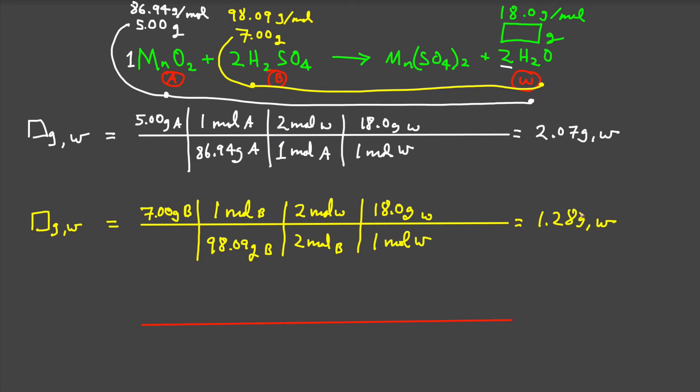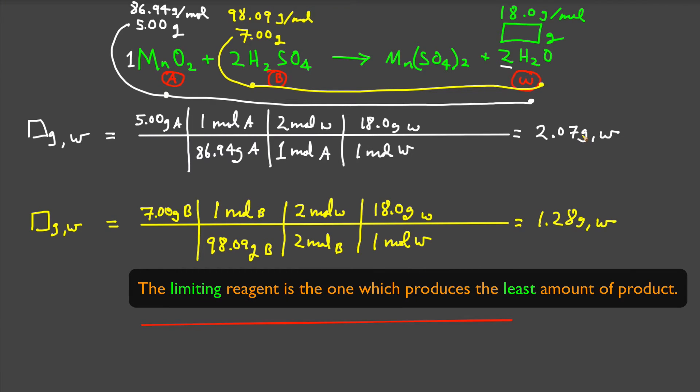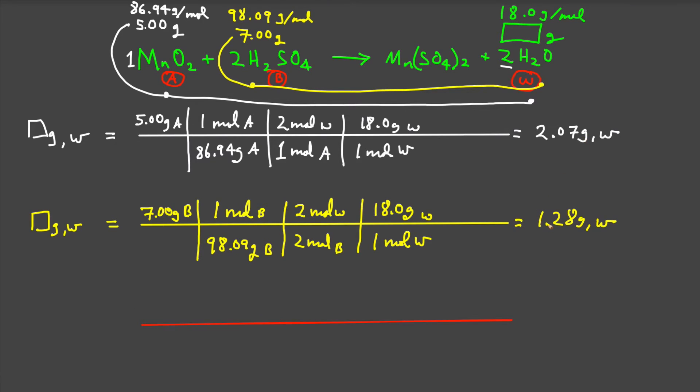And here we can see that indeed, sulfuric acid is going to be limiting because it produces less product than the manganese dioxide. Remember, the limiting reagent is the reagent that produces the least amount of product. So in this case, we have this material is limiting. And we would say that manganese dioxide then is in excess.